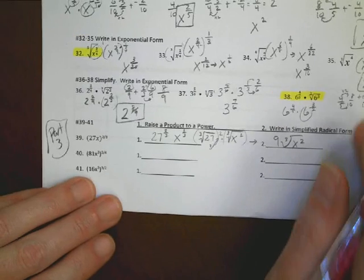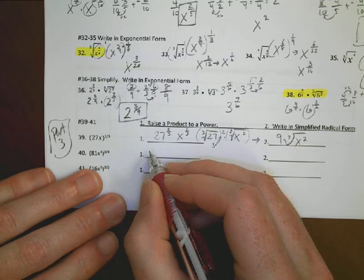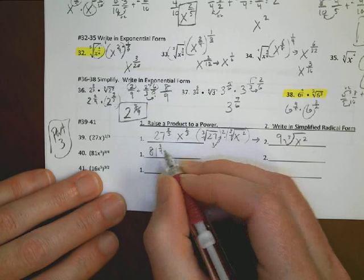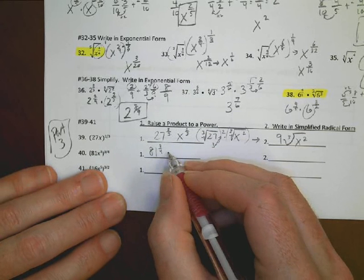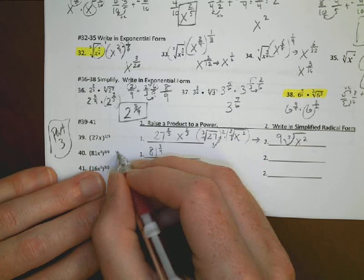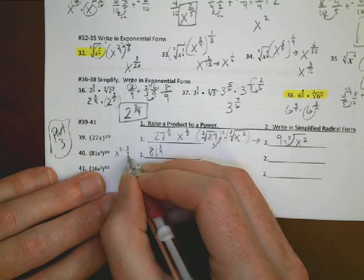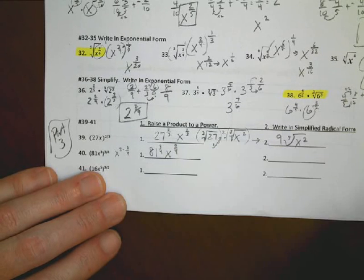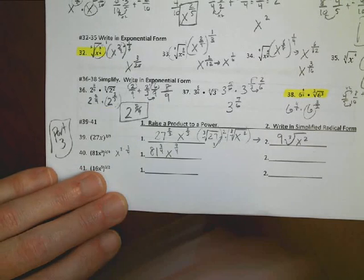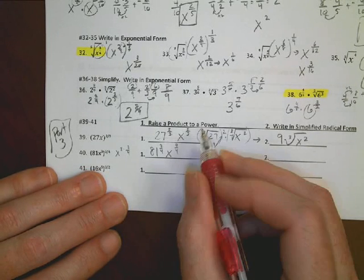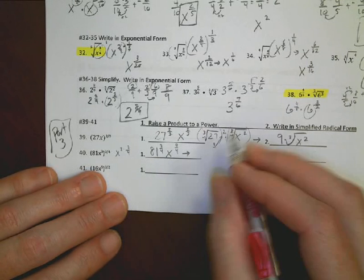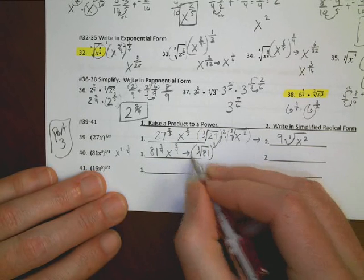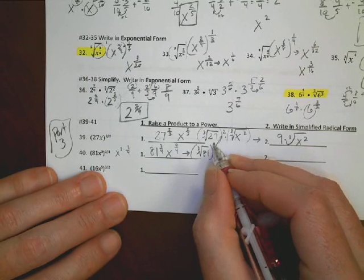Number 40, another crazy one here. I have 81 to the 3/4ths power, and then I end up with x, and because this is x to the 3rd times 3/4ths, I end up with x to the 9/4ths. That's my thing as a product, raising the product to a power. Now I've got to convert that over.